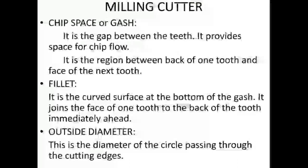Back of tooth is the portion of the tooth behind the land; it slopes downwards from the land and gives clearance to the tooth. Chip space or gash is the gap between the teeth; it provides space for chip flow and is the region between the back of one tooth and the face of the next tooth. Fillet is the curved surface at the bottom of the gash; it joins the face of one tooth to the back of the tooth immediately ahead.